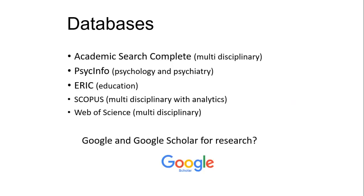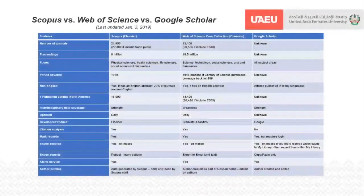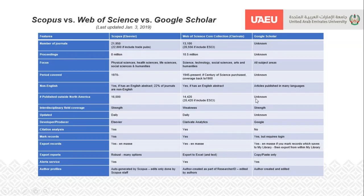This comparison slide gives you an idea of the differences between Scopus, Web of Science, and Google Scholar. You will get a copy of this PowerPoint for reference. In Google Scholar there are a lot of unknowns — they don't release much information, which itself sometimes depletes the authority of the system. Some features are at parity between the three, while others are stronger in certain areas. That's why we need both when conducting searches — we can't do one without the other.